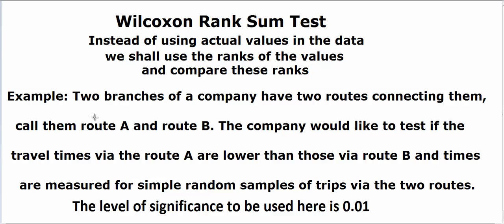So let's consider this example, that there are two branches of a company, and they have two routes connecting them. Just like in our area, you can go to College Park using ICC or the Beltway, in case you want to drive through the highways. And the company would like to test whether the travel times via route A are lower than those via route B.